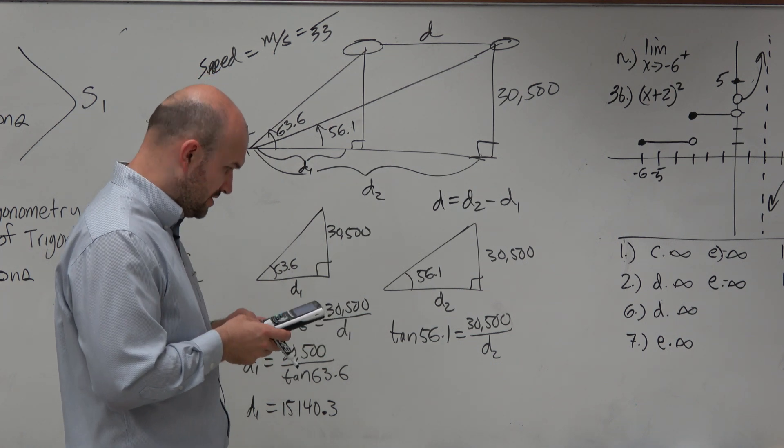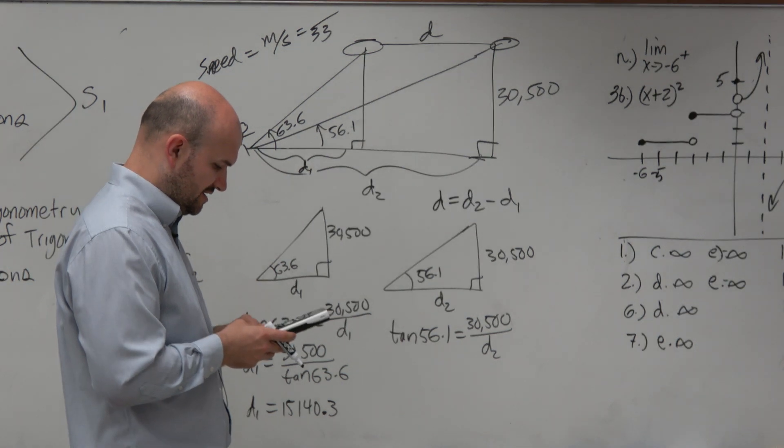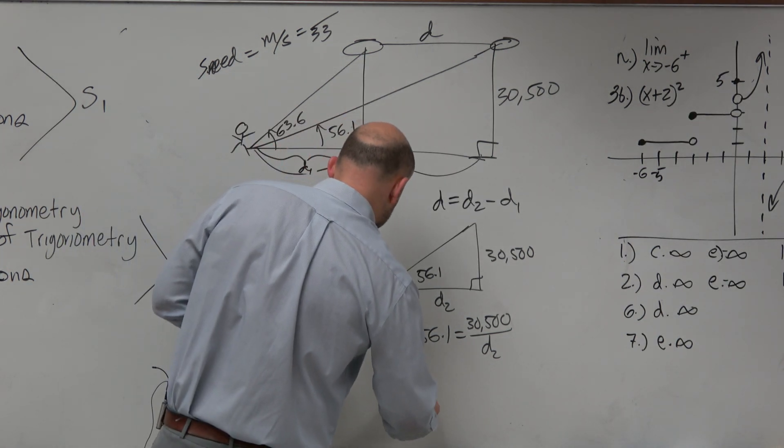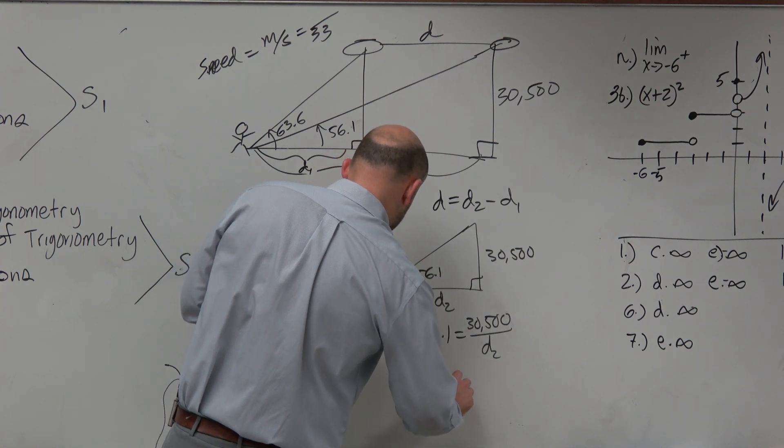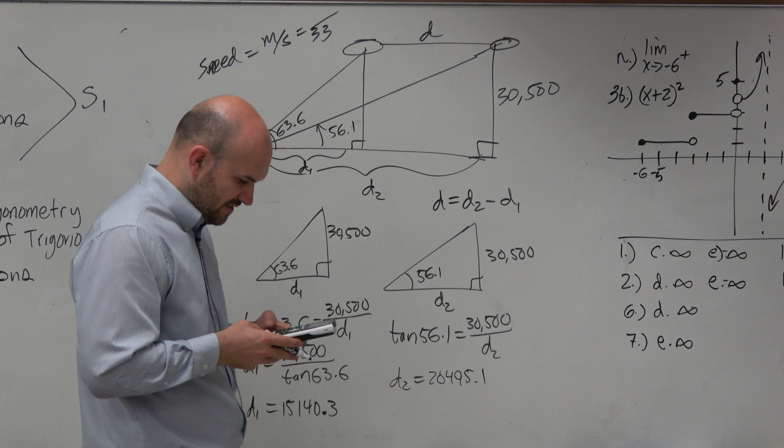Then let's do this one. This one would be 30,500 divided by the tangent of 56.1°. And I get D2 is 20,495.1. And I'm going to store that as alpha B.